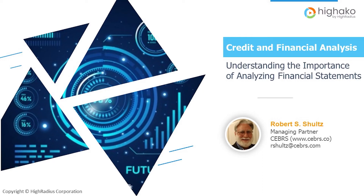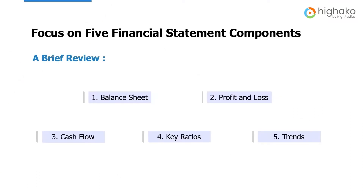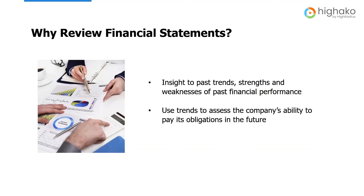This tutorial is going to cover credit and financial statement analysis — specifically what to look for in a financial statement. We have several learning objectives: a brief review of the important components of a financial statement, including the balance sheet, the profit and loss statement, and the cash flow statement. We'll then look at key ratios that give you a really good view into a company's performance and trends, all in the context of benchmarking with similar companies in their industry.